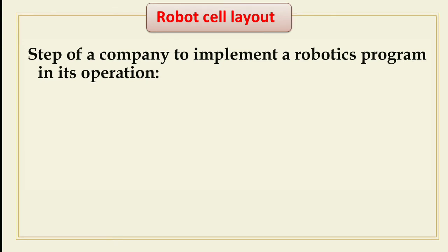Basically, two problems arise in robot application: the physical design of the work cell, and the physical design of the control system which coordinates activities among the various components of the cell. In this chapter, these two problem areas are considered in an important way, bringing together many technology and programming topics from previous lectures.